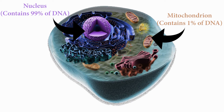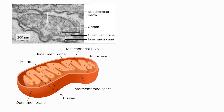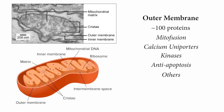Mitochondria import most of their proteins, based on nuclear DNA, that adds structure and reason to the organelle, but also consists of mitochondrial DNA, which make up an estimated 1% of DNA. On the outer membrane, about 100 proteins are used for mitofusion capabilities, calcium uniporters, kinases, and anti-apoptotic proteins, among others.